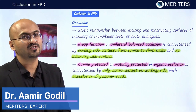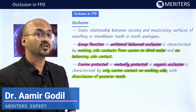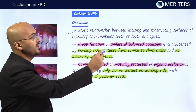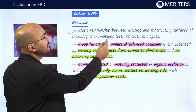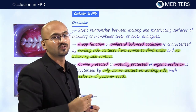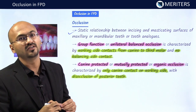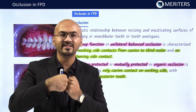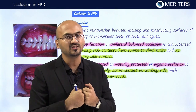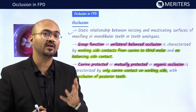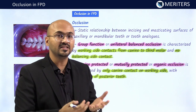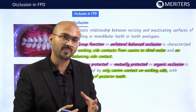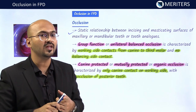In this video we are going to study occlusion in FPD. Occlusion is a static relationship between incising or masticating surfaces of maxillary and mandibular teeth, or tooth analogs, meaning artificial teeth. In layman's terms, it is how the upper and lower teeth are going to match each other or intercuspate. Before you start rehabilitation of missing teeth or a new case, you have to understand what is actually present in the patient's mouth.